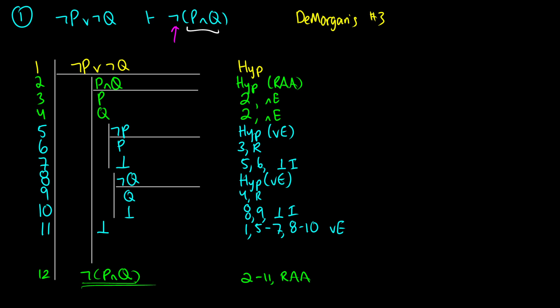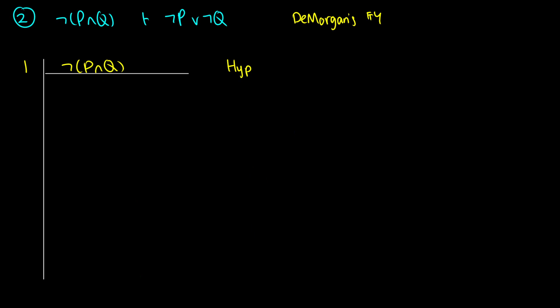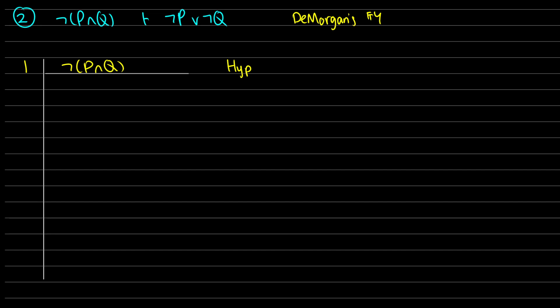Let's look at the other direction: ¬(P∧Q) gives us ¬P∨¬Q. Now this one is a bit of a toughie, but I think we can do this through some ingenuity. I need to get ¬P∨¬Q, but I can't really do anything directly with the hypothesis because it's a negated statement. The most I'm going to be able to do is use the fact that we have ¬(P∧Q), find some P∧Q somewhere, and use it as a contradiction.